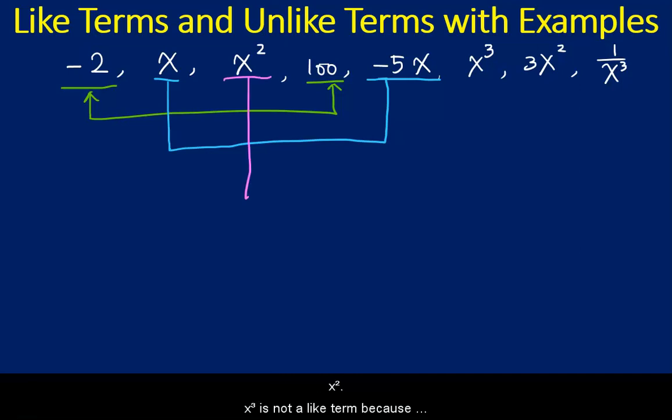x squared. x cubed is not a like term because x cubed is x raised to the third power. How about 3x squared? Yes, because the x raised to the same power. Again, they are allowed to have different numerical coefficients.